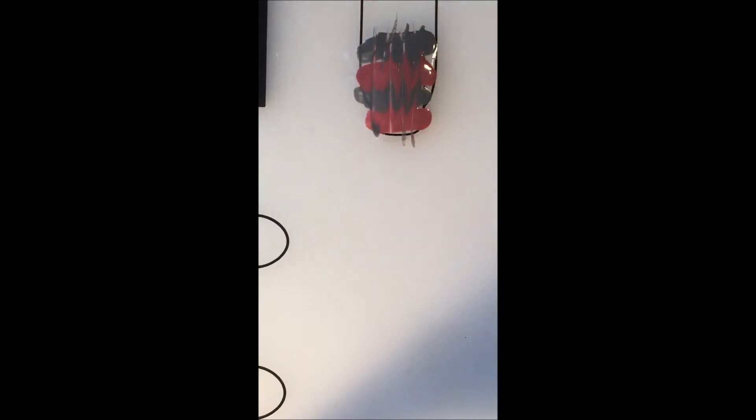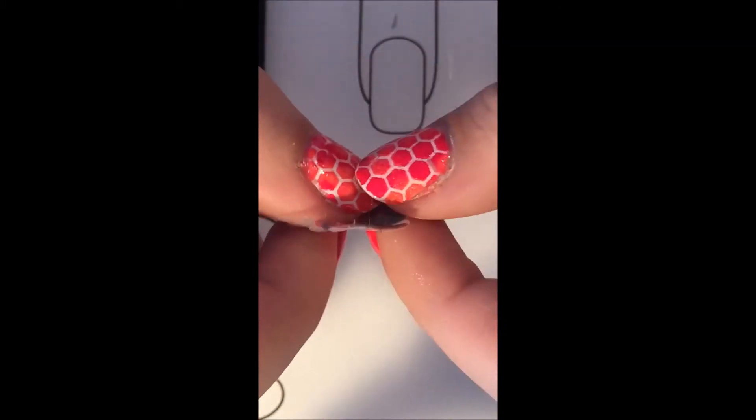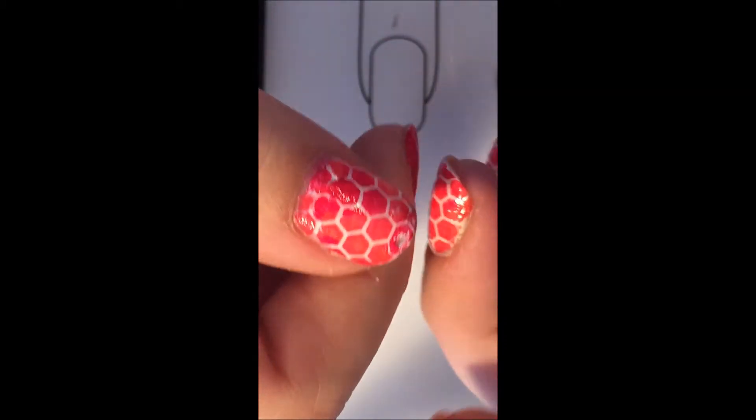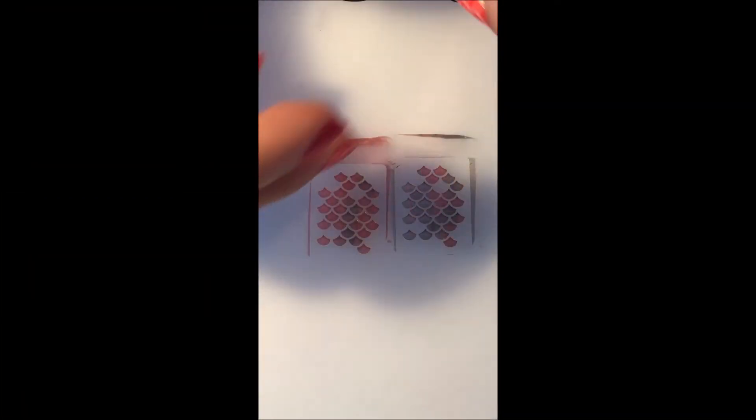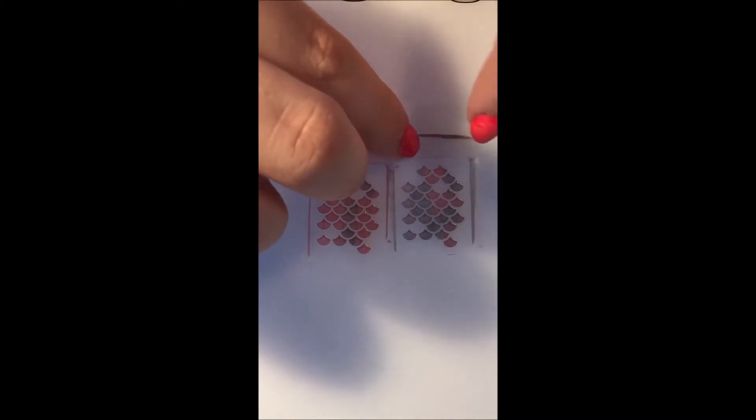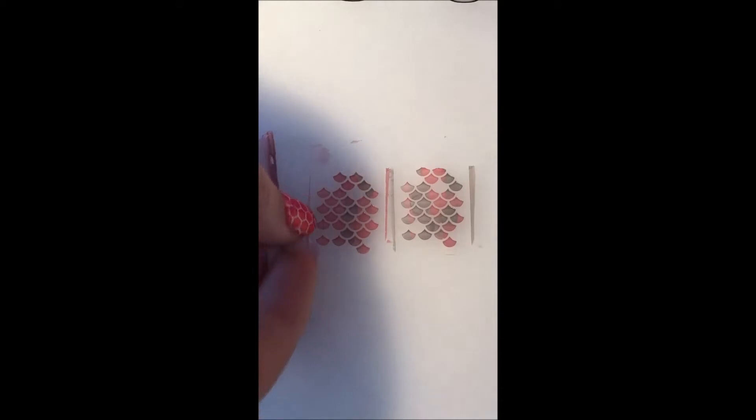Basically for every single decal that you make on here, you use your cuticle pusher and then it just pops up like that. You really need to make sure it's dried before you pick it up or else it will stretch and it will get ruined. Once you have this done, you can just take a piece of scotch tape or a lint roller and place it on the excess, and it just peels right off. That's the other really awesome thing about this mat—it's perfect if you're a messy nail artist.